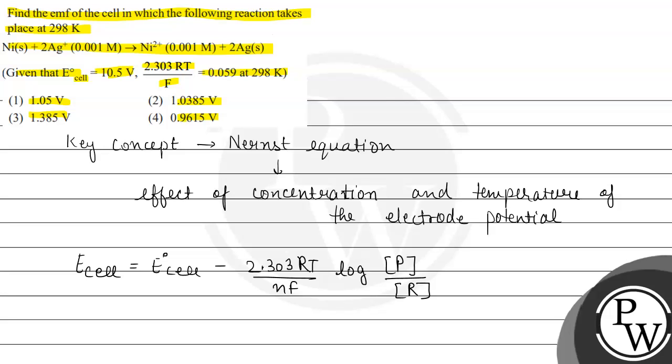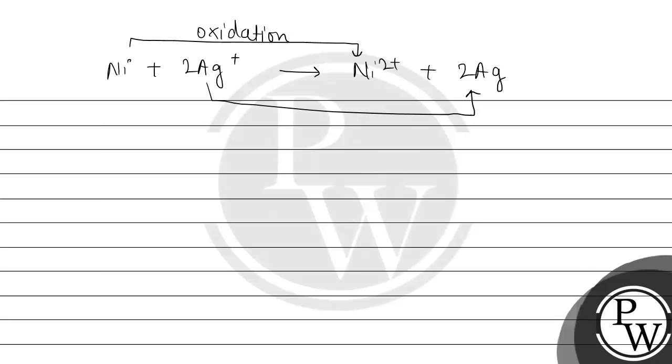So this is the whole equation. For this we have given the reaction that is nickel plus 2 Ag⁺ leads to the formation of Ni²⁺ plus 2 Ag. Here we can see nickel 2 positive formation by the loss of electron, and loss of electron is the oxidation process. Here gain of electron, so this is the reduction.